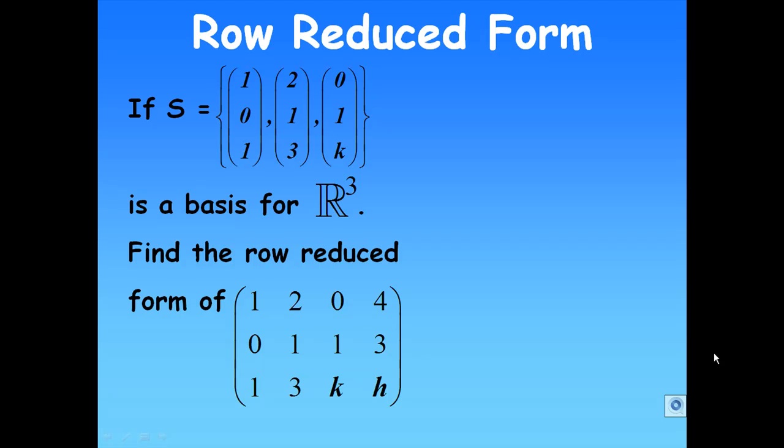We are given the set S consists of three vectors: (1, 0, 1), (2, 1, 3), and (0, 1, k). We are given that this is a basis for three-dimensional space R³. Find the row reduced form of the matrix with rows (1, 2, 0, 4), (0, 1, 1, 3), and (1, 3, k, h), where the left side of the matrix is the vectors in S.